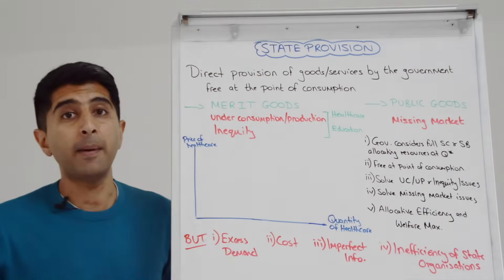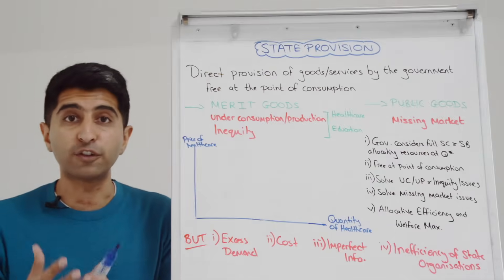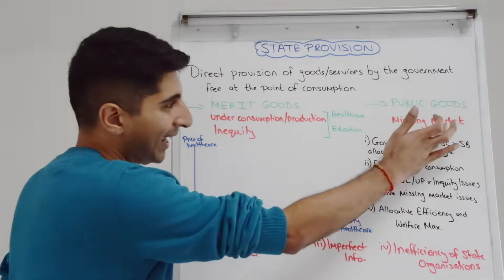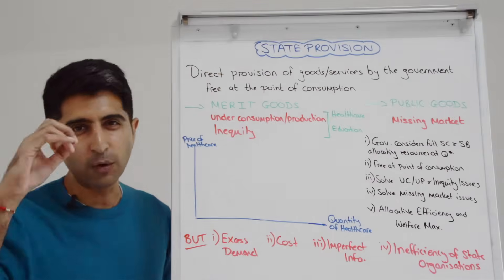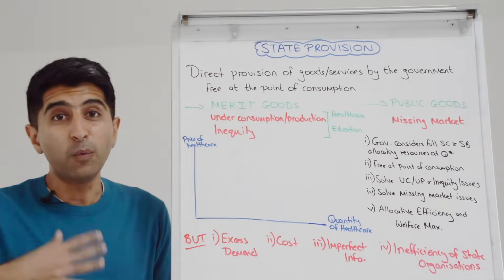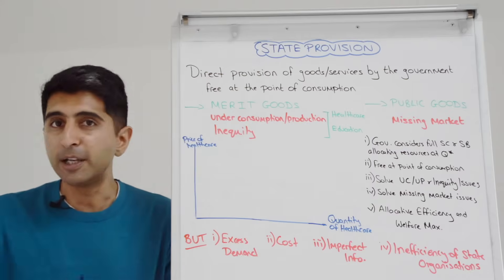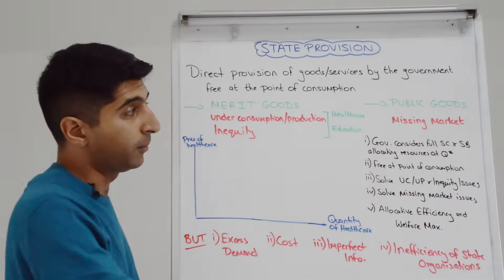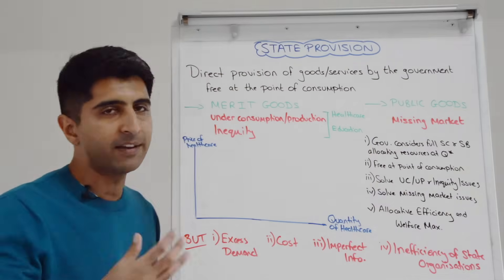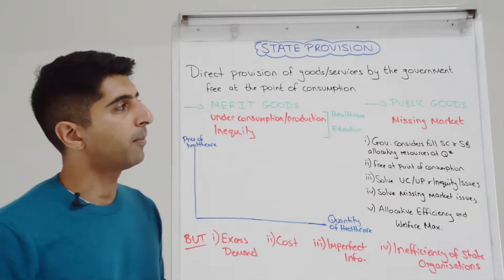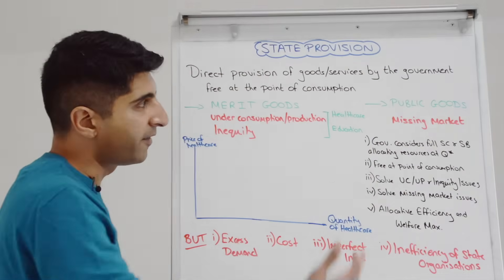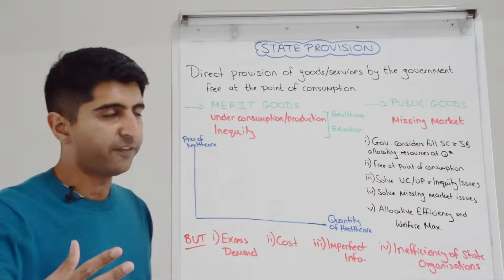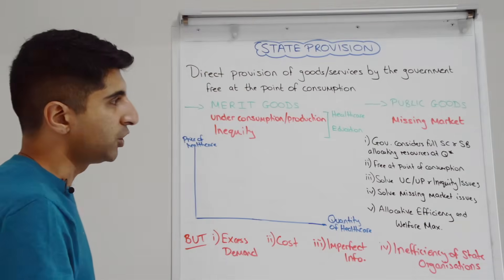We can also talk about state provision to solve public goods market failure. Left to the free market, we know that there wouldn't be a market for public goods — there'll be no provision, there'll be a missing market, given the free rider problem. So state provision, in theory, is a way to completely fix that issue.